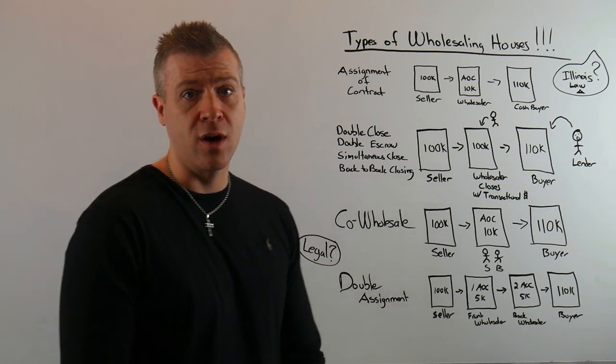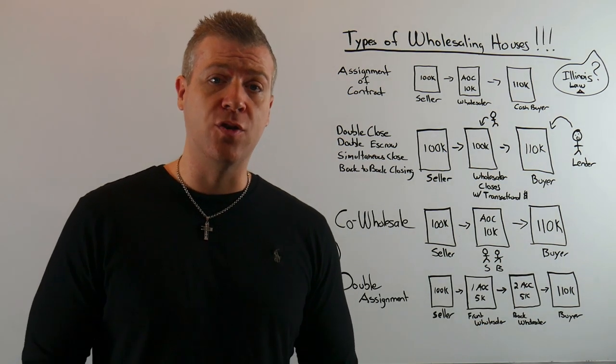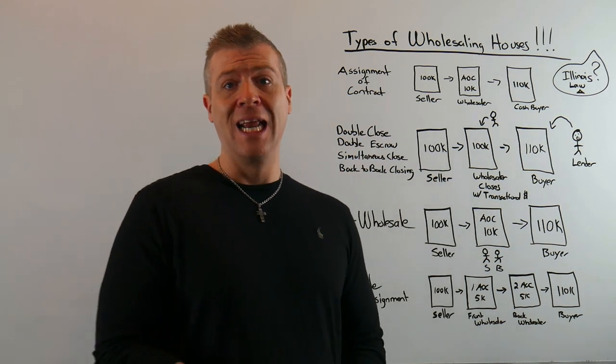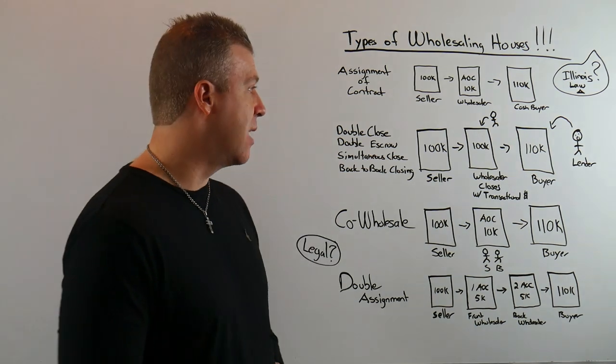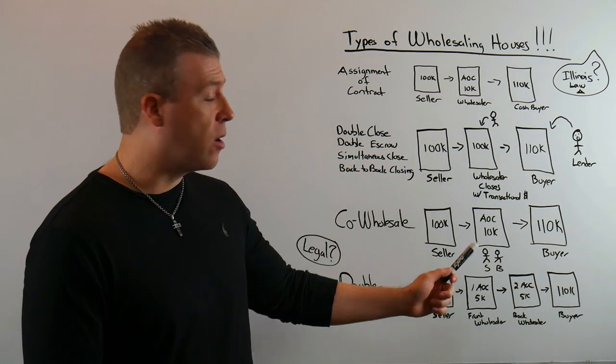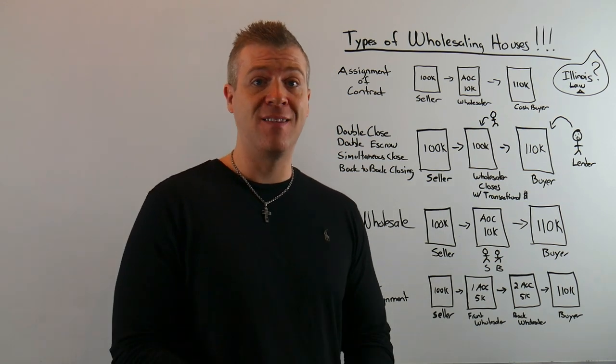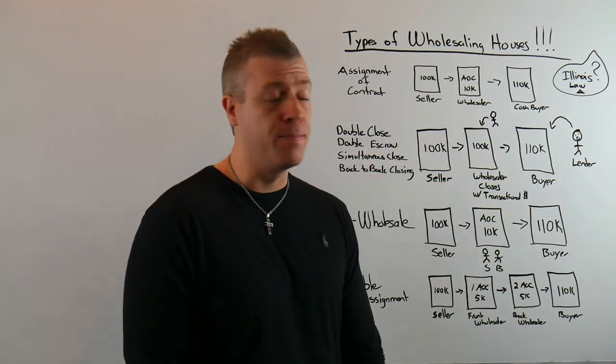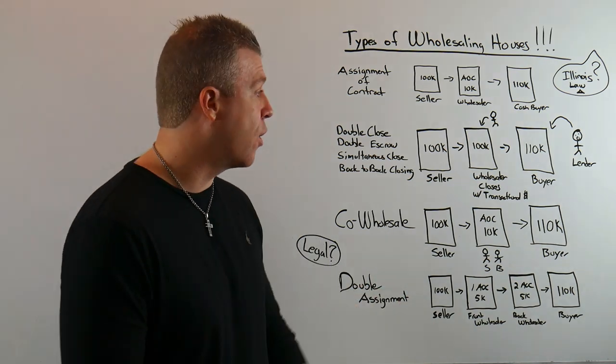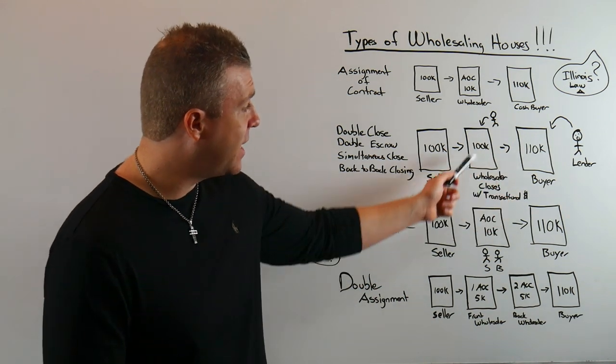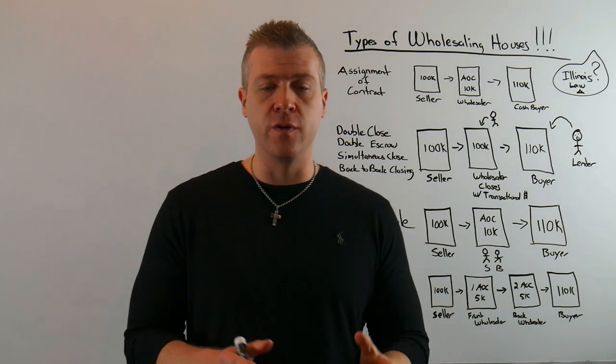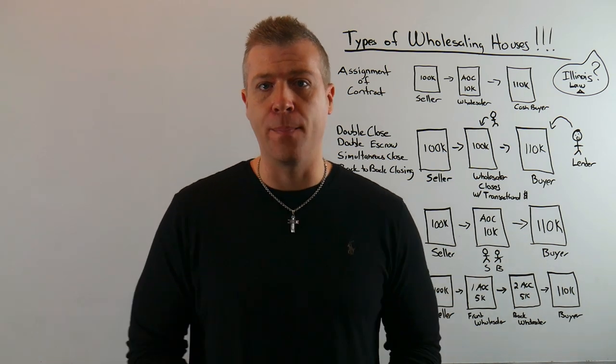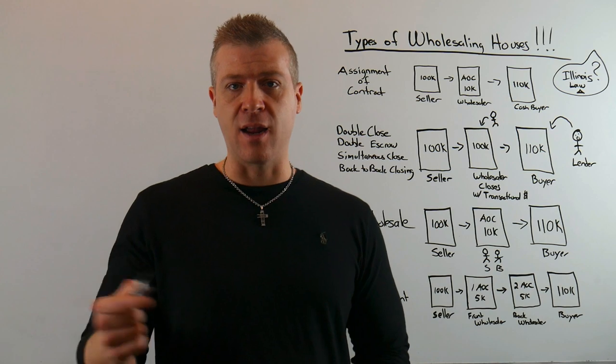The second step - the double close, also called a double escrow, simultaneous close, or back-to-back closing. Same house, same wholesaler, same back-end buyer. Lenders are now involved in this that weren't before. Same house $100,000, same marketing strategy, same contract with the homeowner, same amount you're going to be selling it to the back-end buyer for $110,000. Here's the difference: you are going to have to close. There will be two closings, back-to-back closings. You, the wholesaler, will actually take title and own the property for a very small window of time before the back-end closing happens.